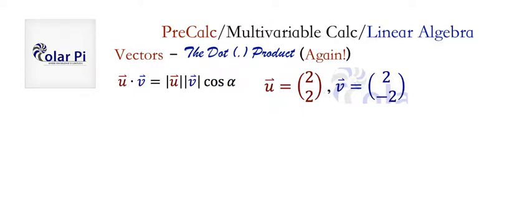Now, using our old method, we would calculate u dot v is equal to 2 times 2 plus 2 times negative 2, which is 4 plus negative 4, that is 4 minus 4, therefore it's 0. And no surprise, we know that if two vectors are perpendicular, their dot product is 0.